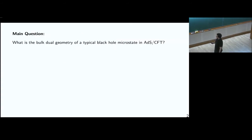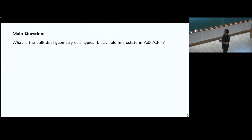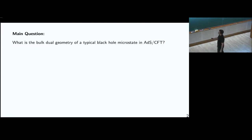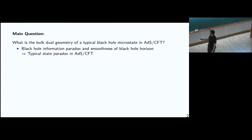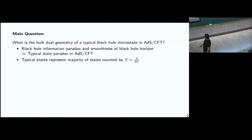In my talk, I'm going to explore one particular question: what is the bulk dual geometry of a typical black hole microstate in the context of AdS/CFT? I will explain what I mean by typical state, but the reason we are interested in this question is that it may be closely related to the black hole information paradox, which has been related to the smoothness of the black hole horizon. This question is particularly well-defined for typical black holes in AdS. By definition, typical states represent the vast majority of microstates counted by the Bekenstein-Hawking entropy formula. It would be nice to know what geometry we should associate to those states.